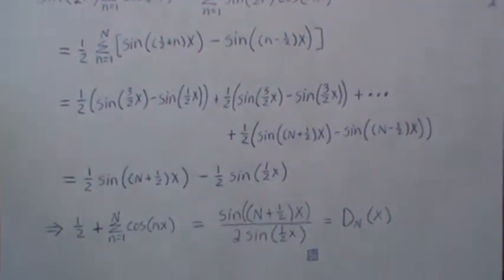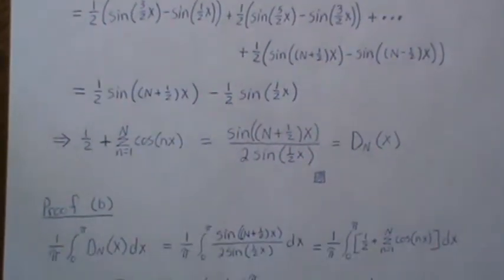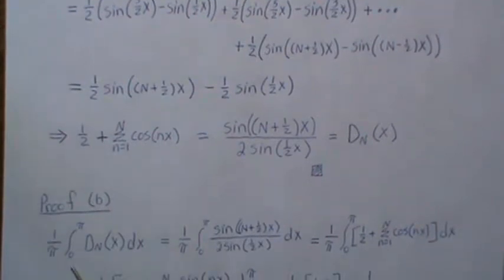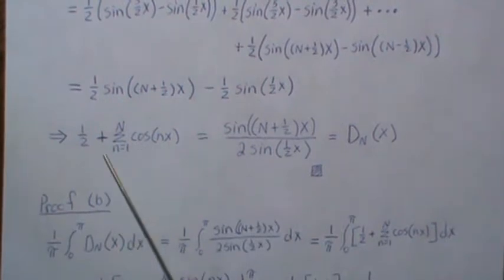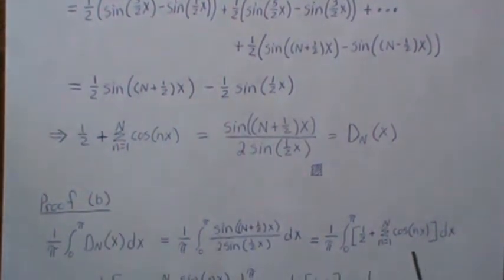Now the proof of (b), the integral of it: Let's integrate from zero to π first of the Dirichlet kernel. If we stick in this piece, it's the same, and if we put in this piece, it's the same. But we'll work with this one.